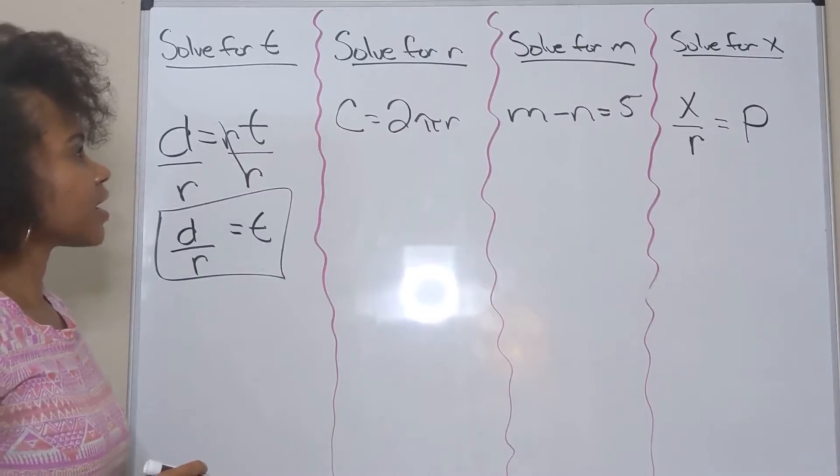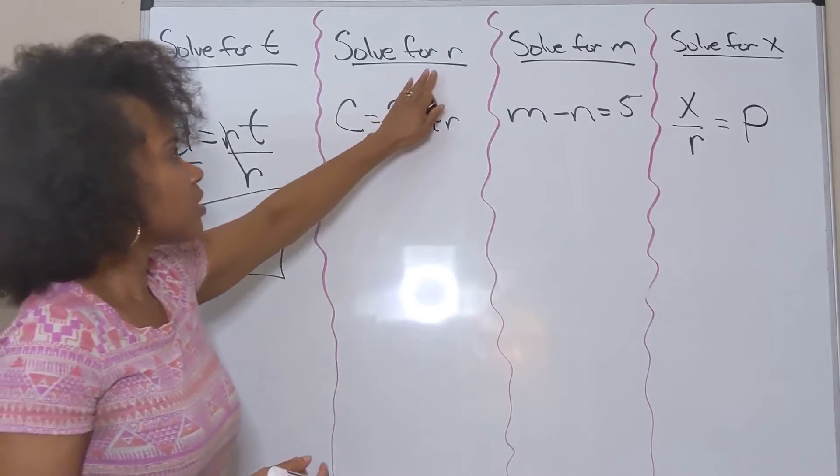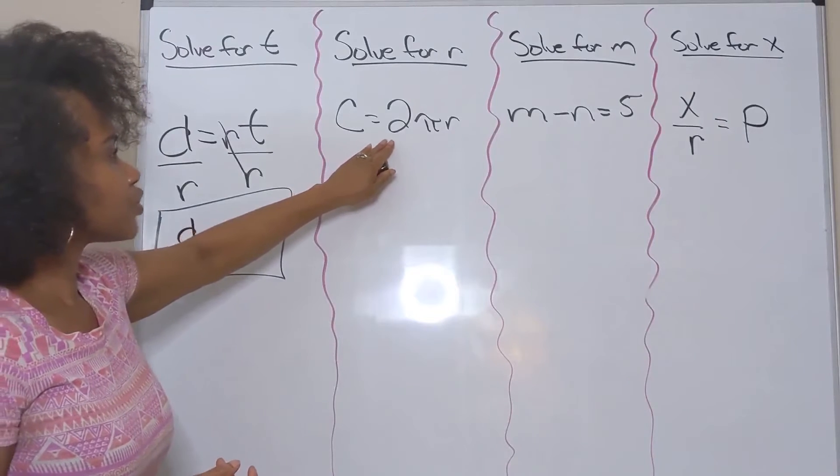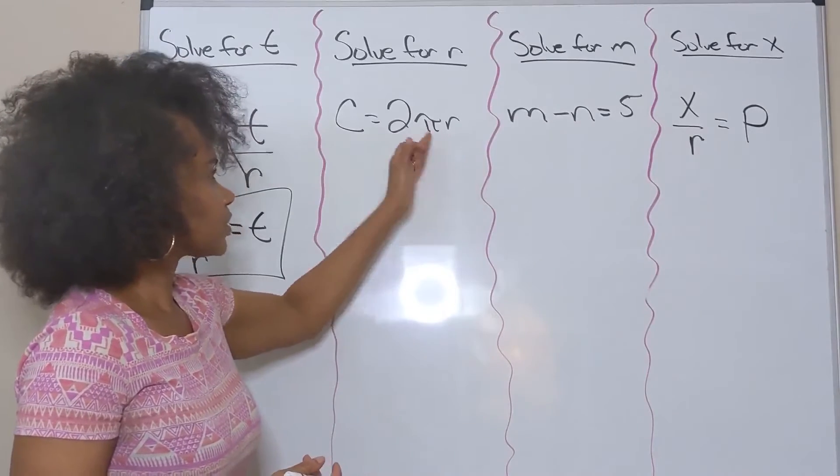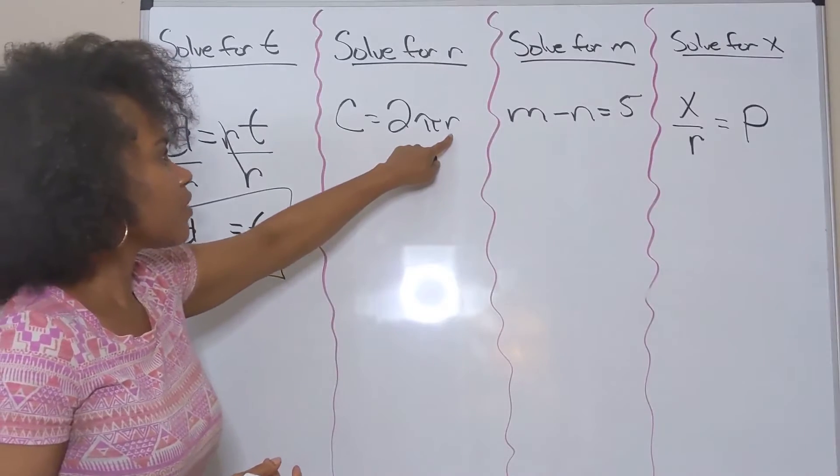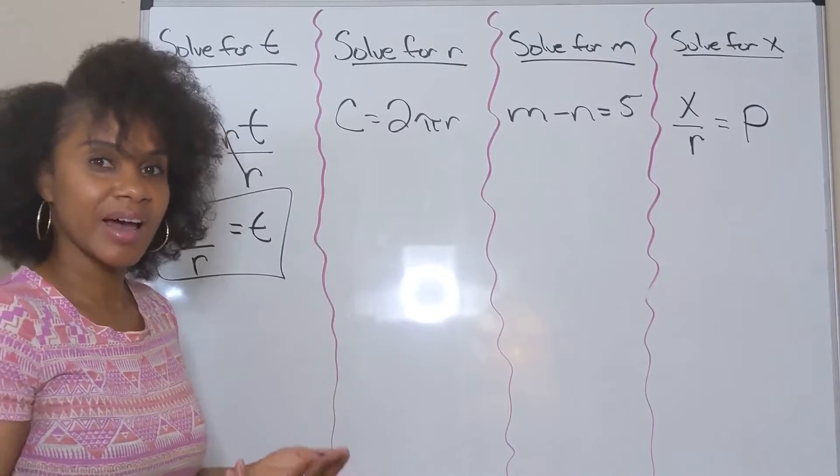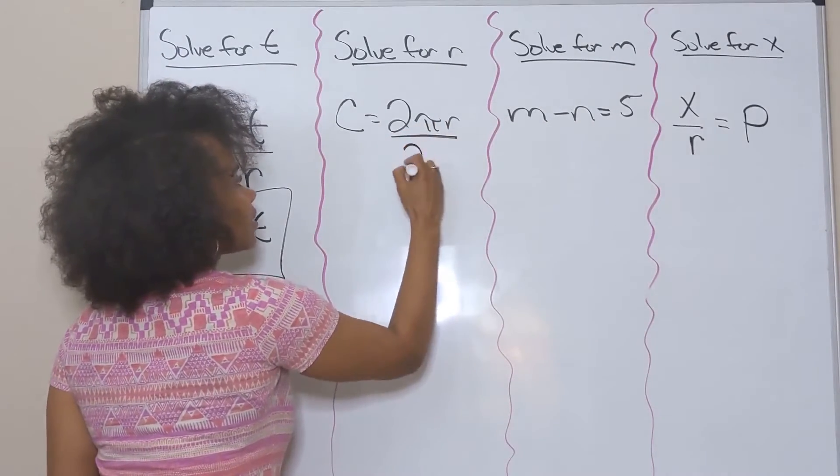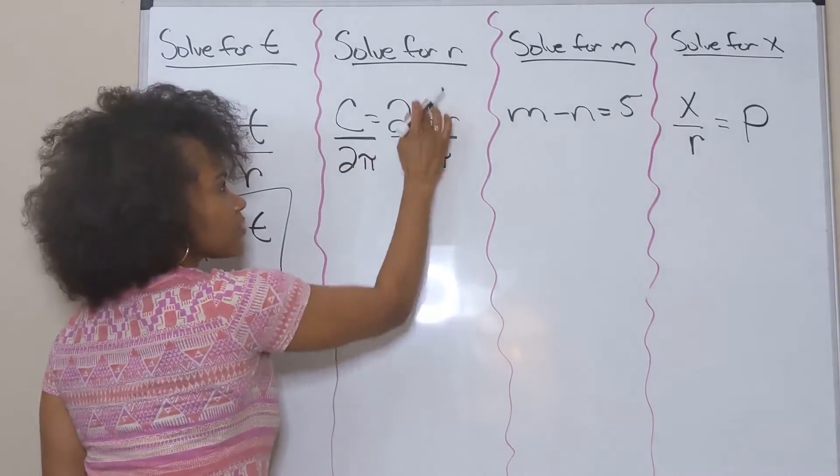Here we have the circumference of a circle formula. We want to solve for r, the radius, and we read this as C=2πr. All of these terms are being multiplied. If we want to solve for r, we simply divide both sides by everything that is not r. I want to leave the r over here, but I want to divide by everything except what I'm solving for, so I'm dividing both sides by 2π.